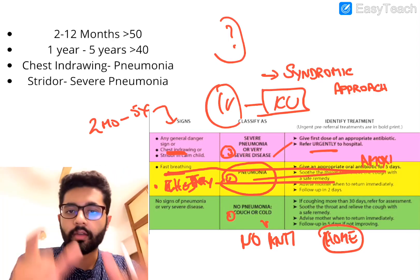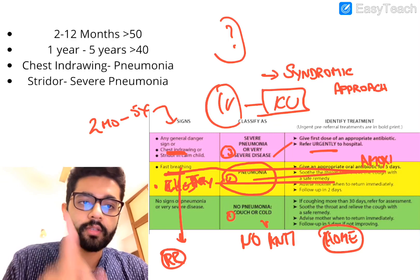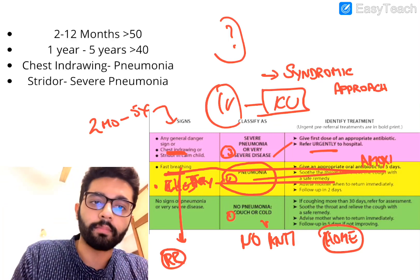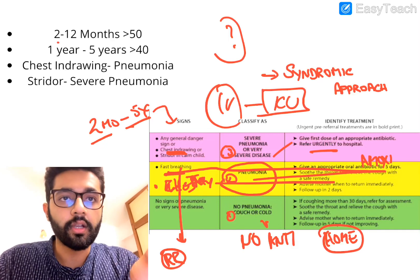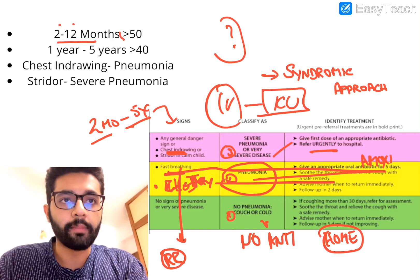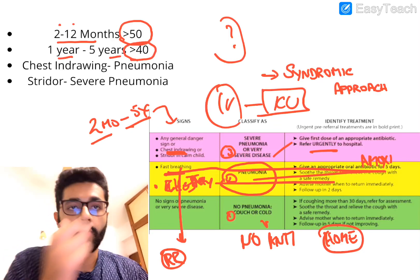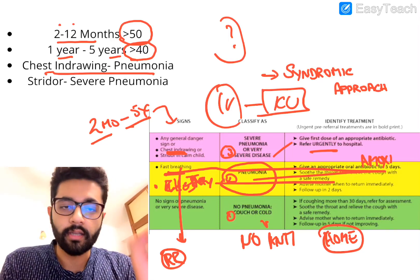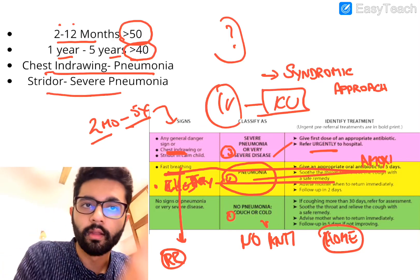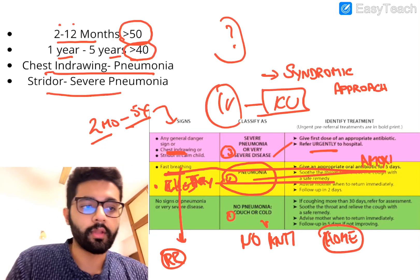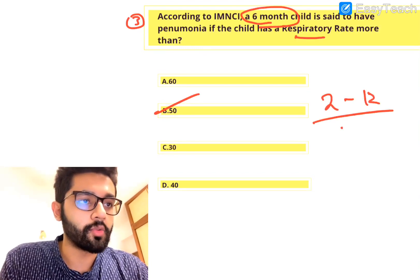The most important feature to diagnose pneumonia per IMNCI is the respiratory rate or tachypnea. For two months to 12 months, tachypnea is defined as a rate over 50. For one year to five years, tachypnea is defined as a rate over 40. The answer here is B — 50, because it's a six-month-old child, between two months and one year, so the threshold is more than 50.